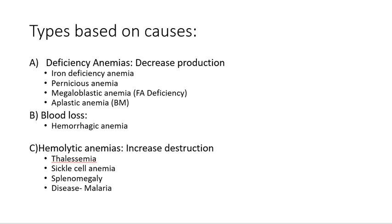Blood loss anemia, called hemorrhagic anemia, occurs due to any trauma or coagulation disorders — abnormalities in clotting mechanisms or platelets. Hemolytic anemia is where production is present but RBCs are being destroyed by some cells — increased destruction. Types include alpha and beta thalassemia, sickle cell anemia where sickle-shaped RBCs are produced and lysed when blood passes through the spleen, and splenomegaly which increases destruction.